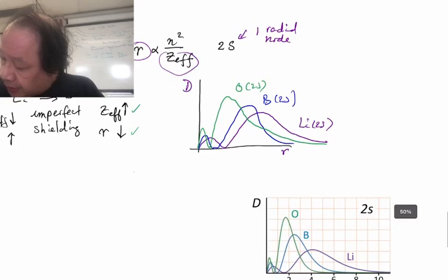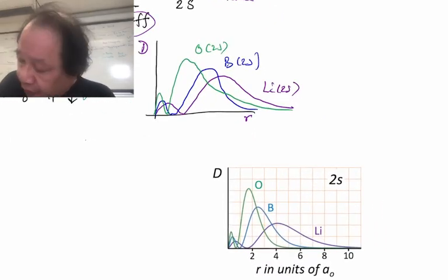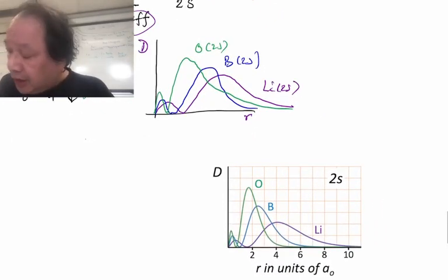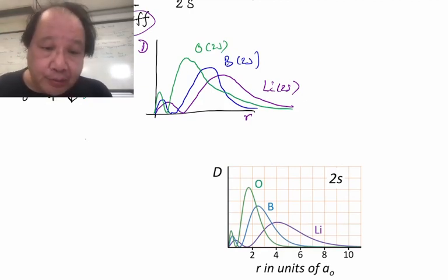And we can compare that to what actually is seen for the elements oxygen, boron, and lithium. And we see that our qualitative pictures are correct.